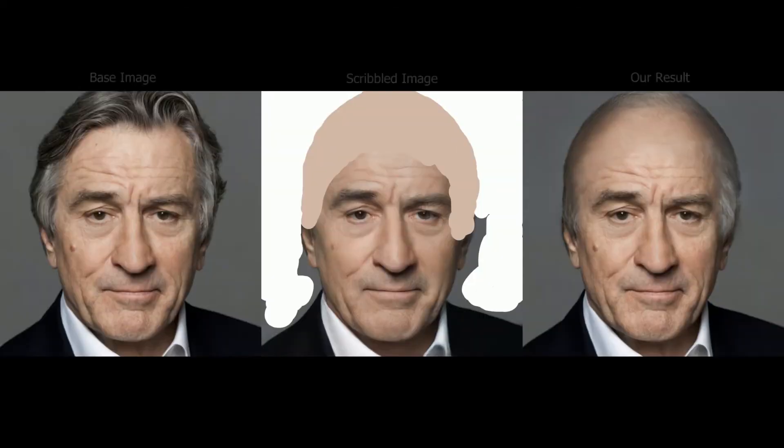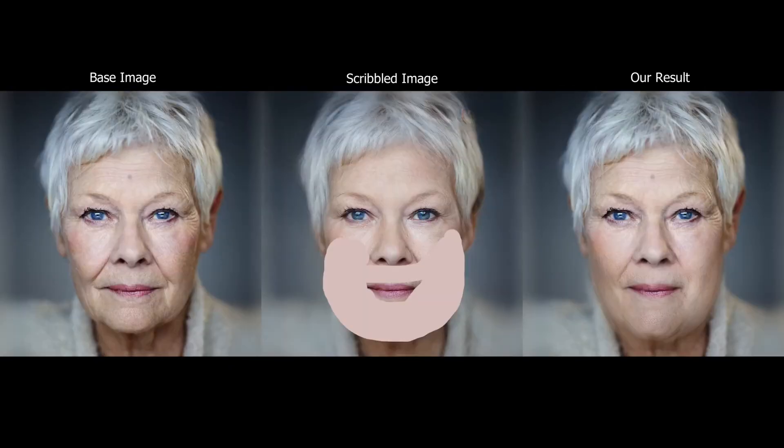Next we show local edits using scribbles. Here a scribbled image is converted into a semantically meaningful edit of high perceptual quality. We are able to perform various local edits to different images.